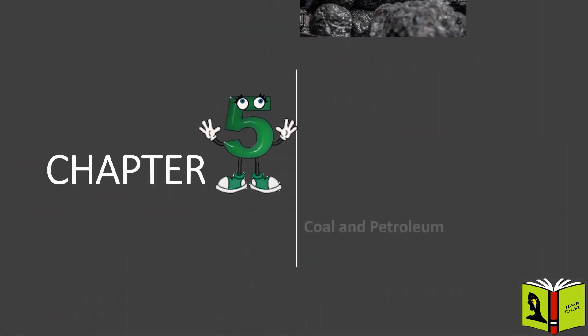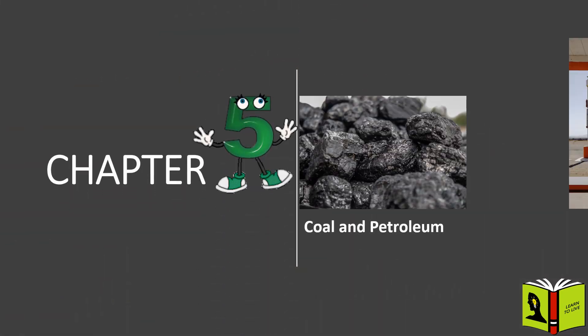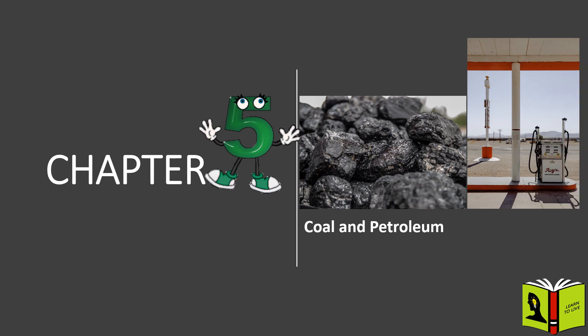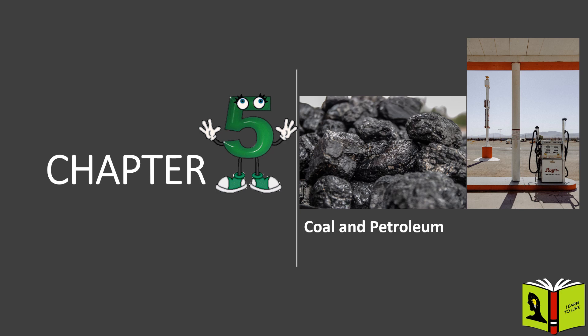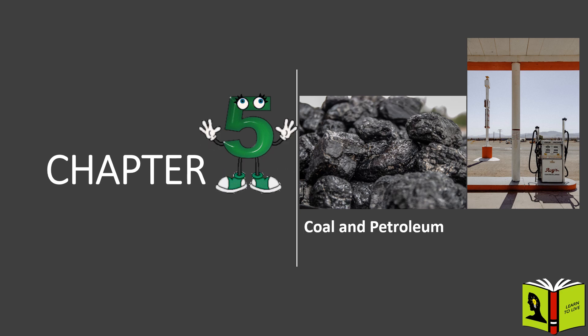Chapter 5: Coal and Petroleum. We are using a lot of items from nature, like air, water, soil, coal, petrol, etc. In this chapter, we will be learning about the coal and petroleum we obtain from nature.